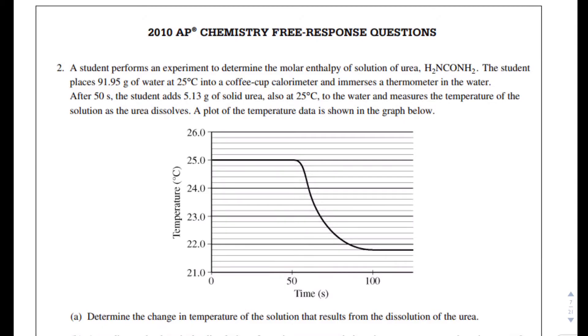We are going to take a look at question 2 from the 2010 AP Chemistry Free Response questions. In this particular question, a student performs an experiment to determine the molar enthalpy (delta H) of solution of urea. The student places 91.95 grams of water at 25 degrees Celsius into a coffee cup calorimeter and immerses a thermometer in the water. After 50 seconds, the student adds 5.13 grams of solid urea, also at 25 degrees Celsius, to the water and measures the temperature of the solution as the urea dissolves. A plot of the temperature data is shown in the graph below.